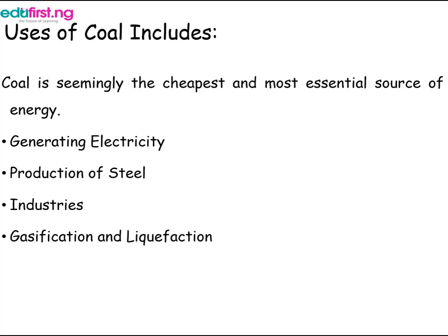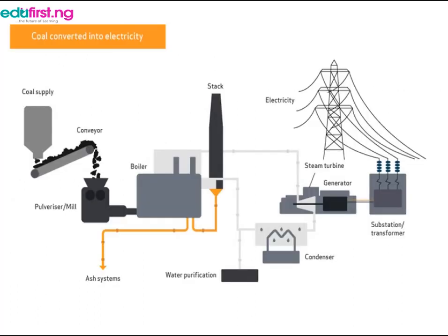Lastly, coal is used for domestic purposes. There are still areas that use coal in the production of domestic energy like fuel for cooking and as a source of heat. These are some of the major uses of coal. Here is a setup showing how coal has been converted into electricity — from the supply of coal down to the substation where electricity can be transferred to high-tension cables.